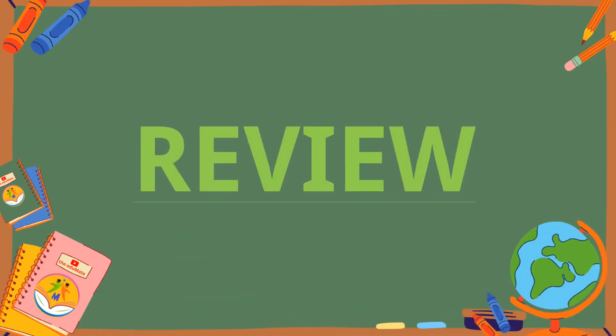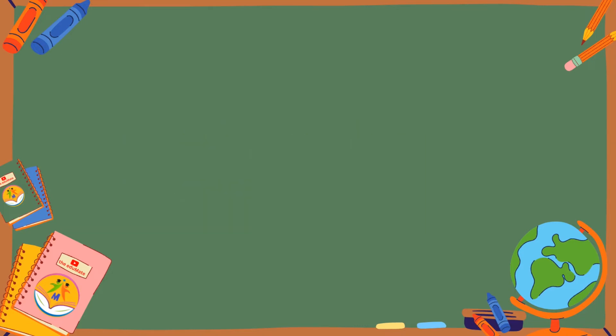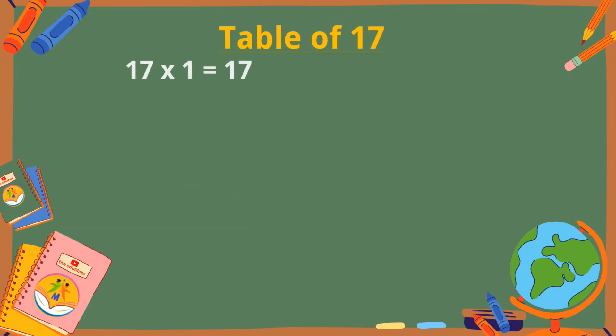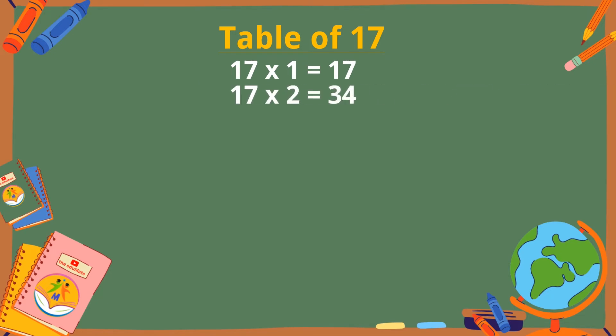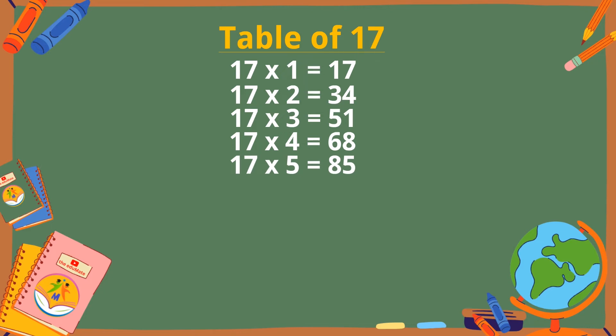Let's revise the table of 17. 17 ones are 17. 17 twos are 34. 17 threes are 51. 17 fours are 68. 17 fives are 85. 17 sixes are 102.